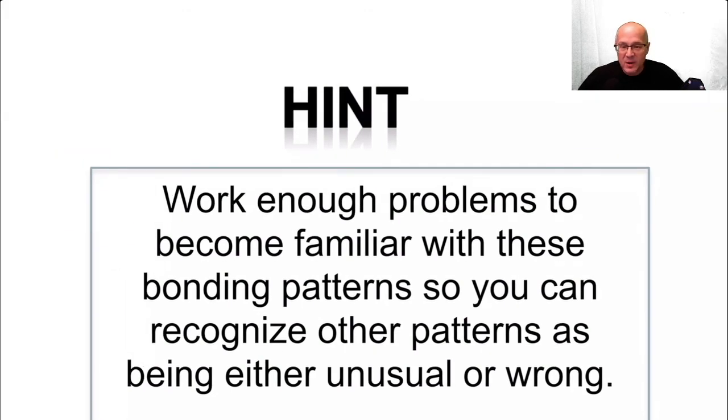And here's a hint. Work enough problems to become familiar with these bonding patterns so you can recognize other patterns as being either unusual or wrong. That's really good. Recognizing when something is incorrect. Hydrogen having two bonds. Oxygen having five bonds. Carbon having seven bonds. I mean, these are things I see on your exams all the time. They're pretty big actually if you draw six bonds to carbon. But I see them all the time. Don't do them. They cost you dearly on exams. Keep yourself tight. Keep your mind focused. Don't allow yourself to draw five bonds to carbon. Just know that it's wrong. Don't draw two bonds to hydrogen. It's always wrong. Be mindful of these things.